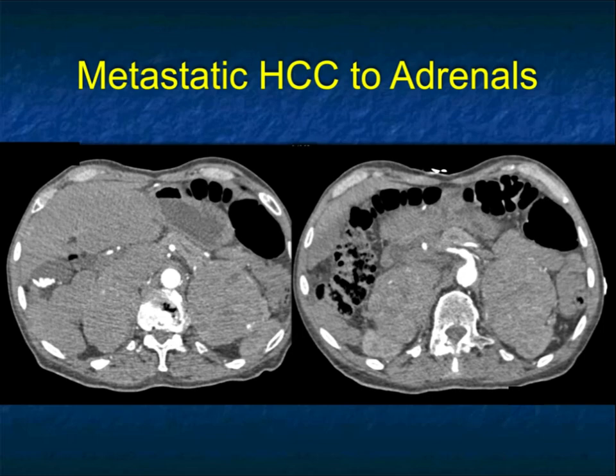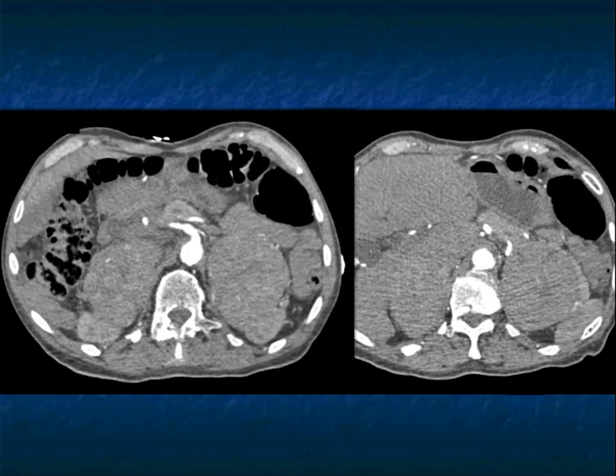Another patient with a cirrhotic liver — if you looked at all the images you would have seen a hepatoma. Large bilateral adrenal masses: metastatic hepatoma.